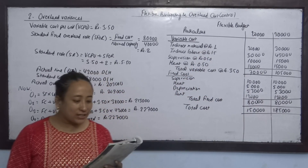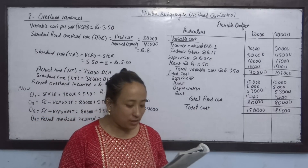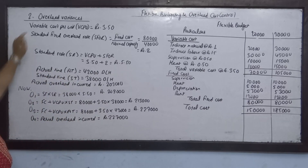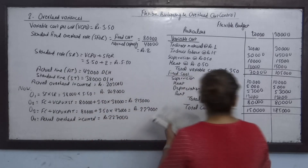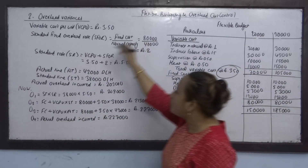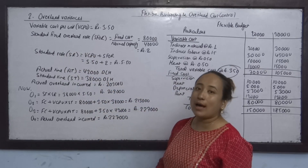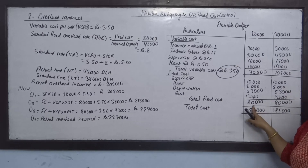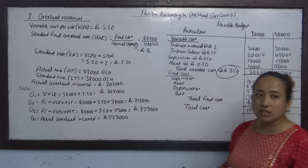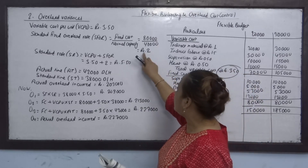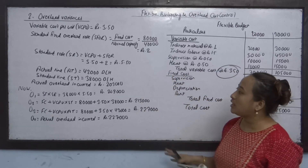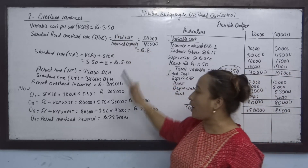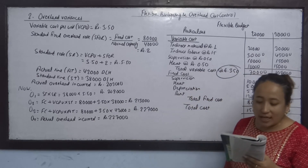Fixed overhead variance analysis covers capacity variance, efficiency variance, and spending variance. The variable cost per unit (BCPU) is 3.50. Standard fixed overhead rate (SFOR) formula is: standard fixed cost divided by normal capacity. Fixed cost is 40,000 DLS. Standard rate is BCPU plus SFOR — that is 3.50 plus 2.50.